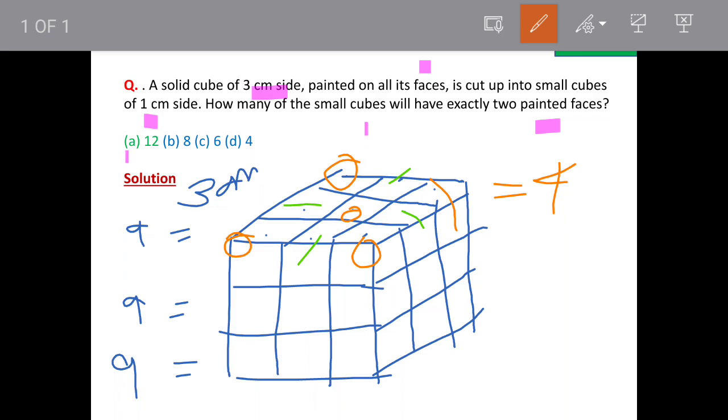Then let's see next layer. In next layer the only corner cubes will have 2 faces painted. This will have single face painted, this will have single face painted and similar situation on other sides. So that means there are total 4 cubes in the middle row.